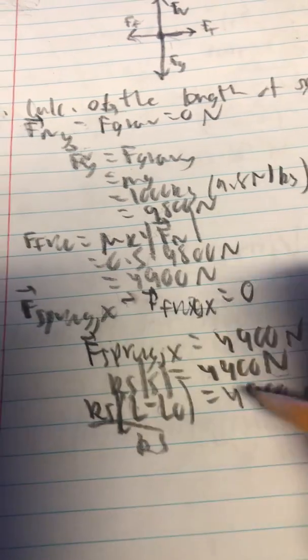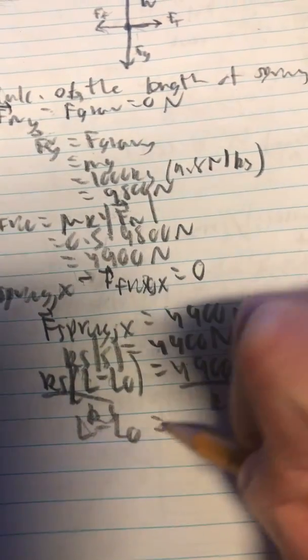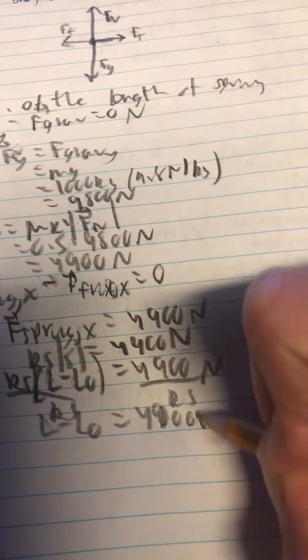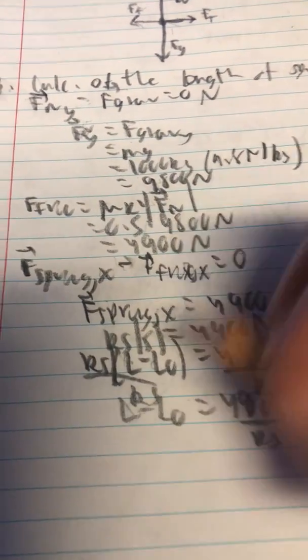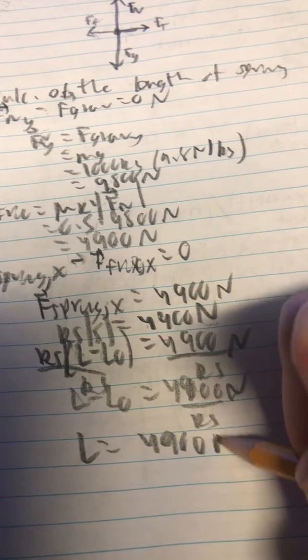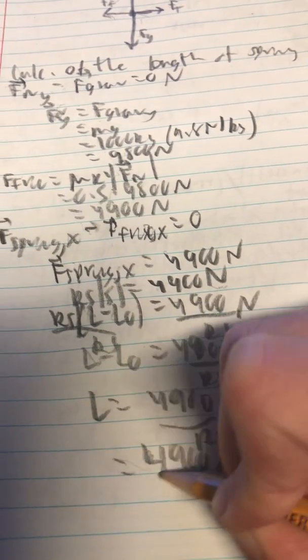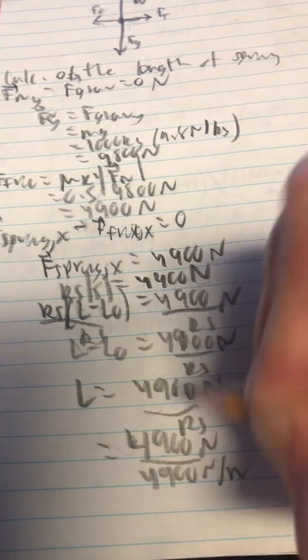So we can divide both sides by K and s equals L minus L₀ equals 4900 newtons divided by K, and the length of the spring will be that plus the relaxed length.